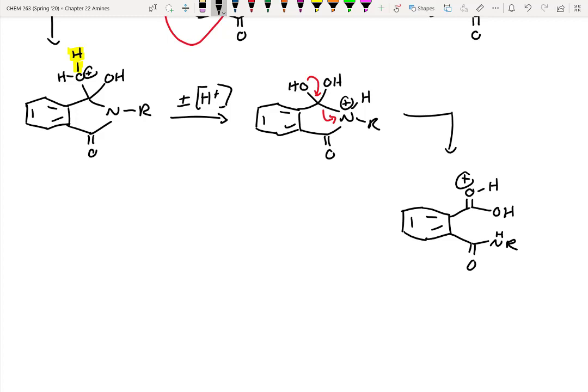So now we've done the ring opening reaction. We can deprotonate. Get to our neutral intermediate. And we've got our neutral intermediate. Next thing we would do is basically hydrolyze this next.